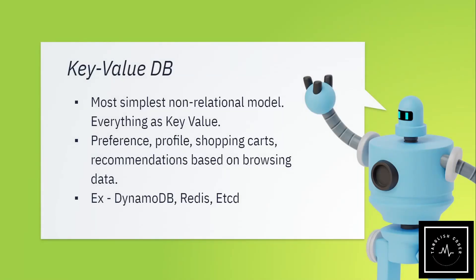The next one is the Key-Value database — the simplest database in the world. The name says it all: Key and Value, that is the entire database. If you know JSON, you can easily understand this — JSON is nothing but keys and values, and a value can be another object. It's like a very big JSON. Use cases include preferences, profile data, shopping cart, and browser user activity. In recent times, key-value databases are utilized a lot on the client side.